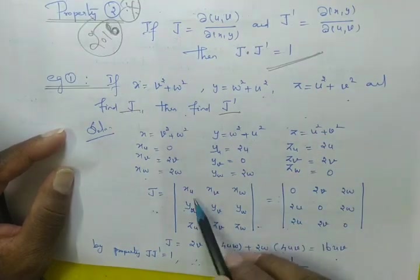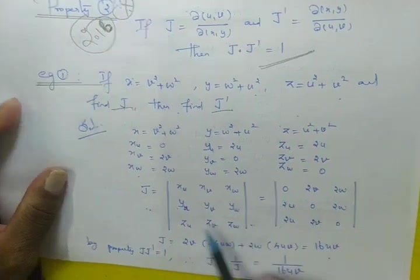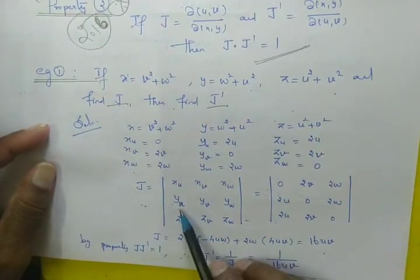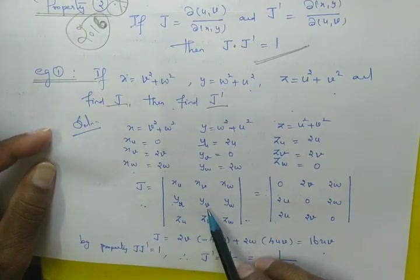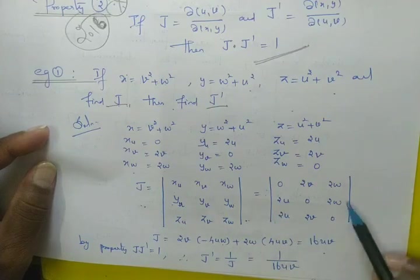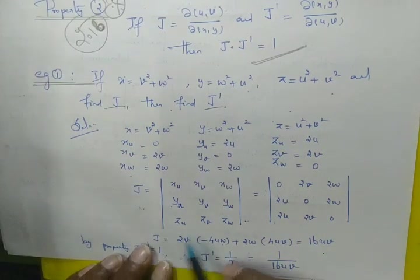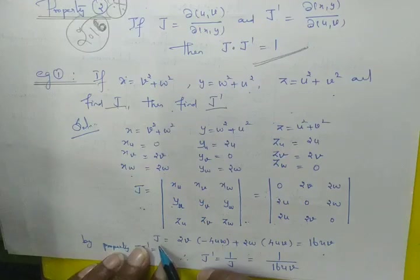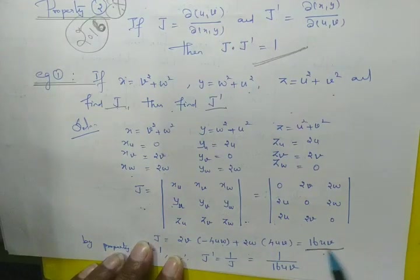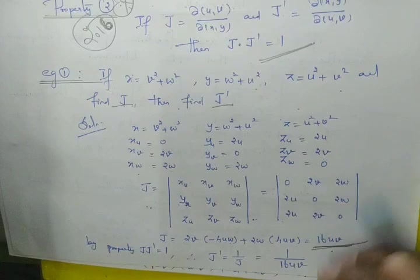If we substitute into the determinant — x_u, x_v, x_w; y with respect to u, y with respect to v, y with respect to w; z with respect to u, v, w — and expand the determinant, at the time of expanding, the value of J you are getting is 16uv. Value of J comes to 16uv.